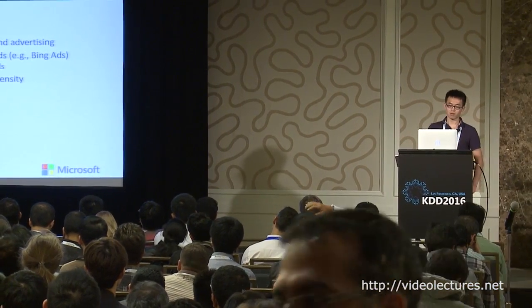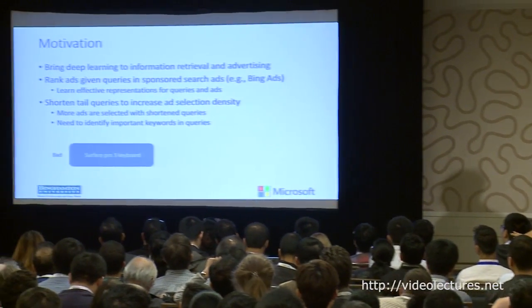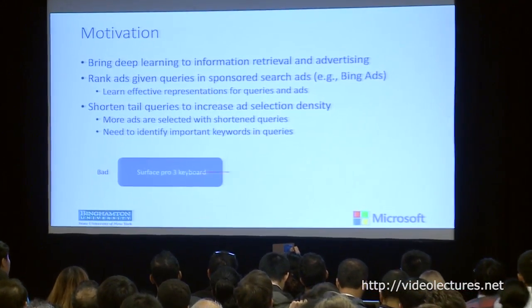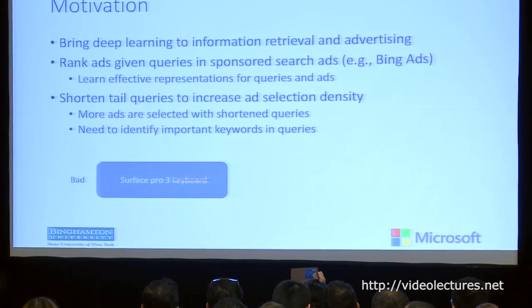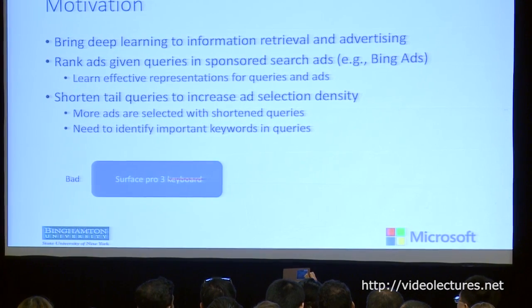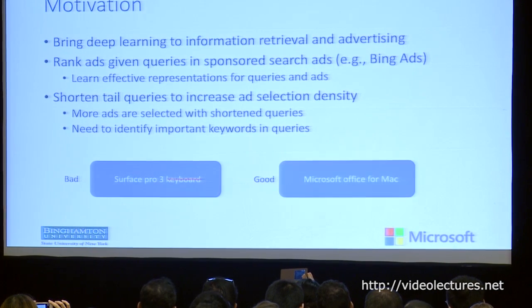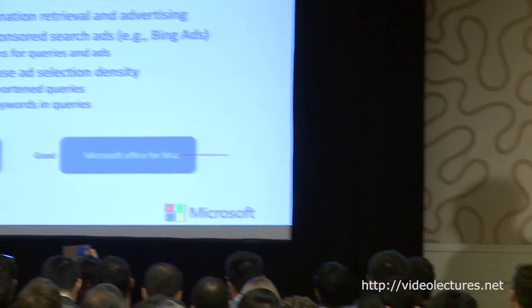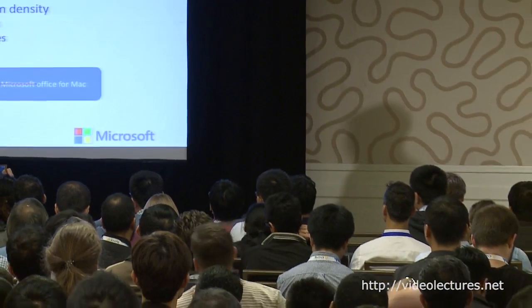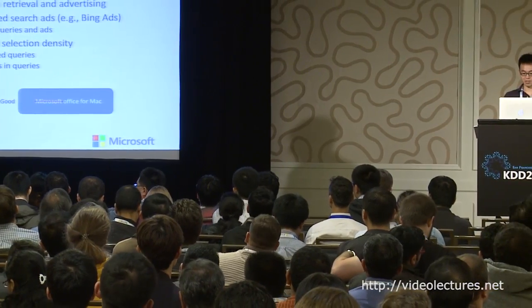Here's a bad example of query shortening. For this query, if you drop the word 'keyboard,' it totally changes the intent and subject of the query, which is actually about a keyboard instead of a tablet. However, in this example, if you drop the word 'Microsoft,' it actually doesn't affect the intent of the query. So this is what we consider a good example.